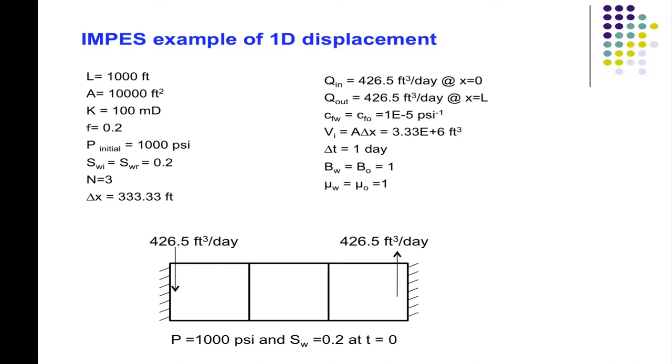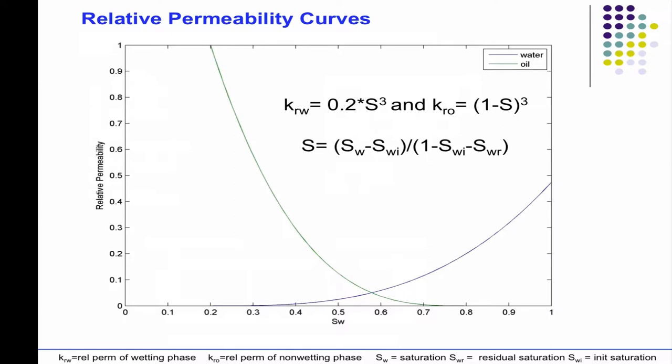As we move forward and see the individual equations, normally there should be a BW over BO out there. But since it's just 1 over 1, you won't see them in the equations. So we need some material properties. These are relative permeability curves, the Corey Brooks relationships.